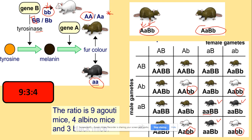Does that make sense? Yes — the A alleles are recessive as per our equation, and at least one dominant B is present, coding for melanin to produce pigment. So that's everything for epistasis. See you later.